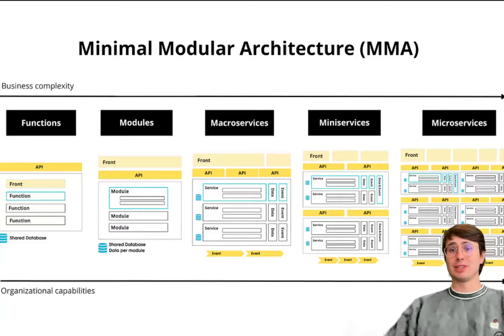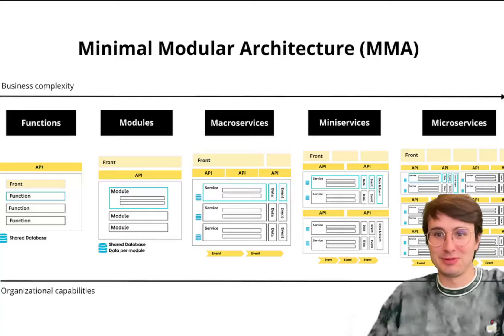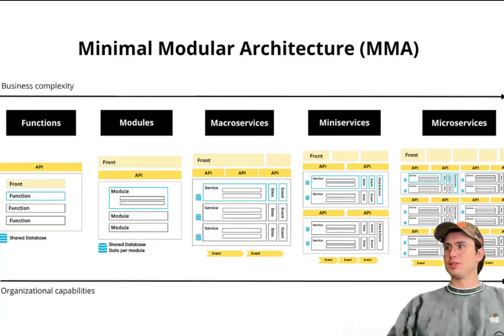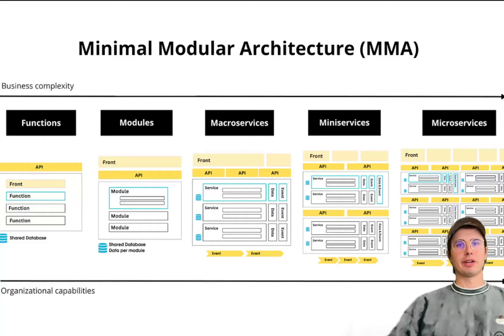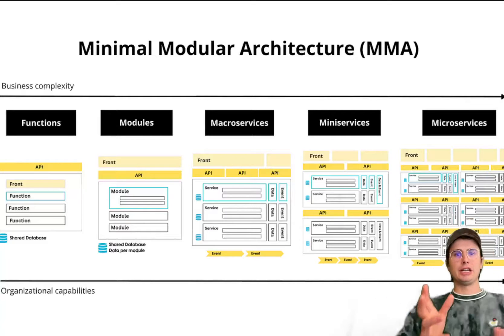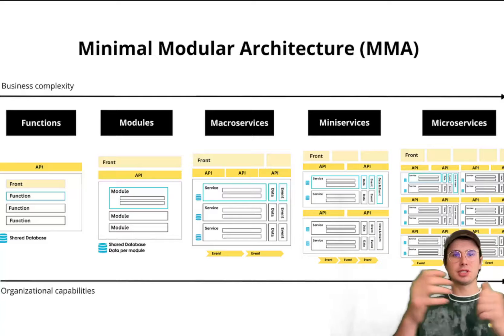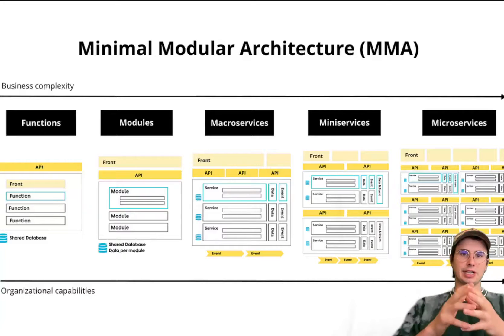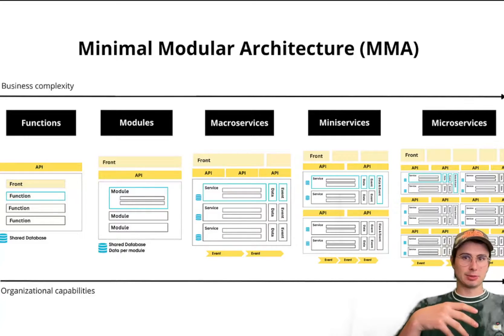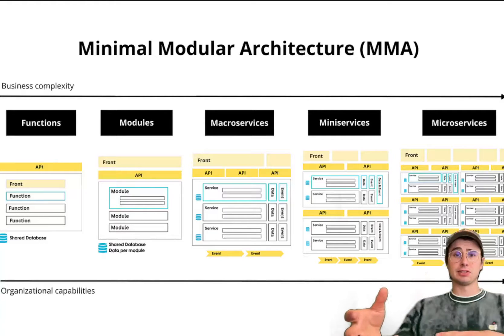So without further ado, let's get into it. The first term I want to talk about is modularity. Modularity involves dividing a software system into distinct self-contained units known as modules, where each module is intended to address a specific set of responsibilities and interact with other modules through well-defined interfaces.